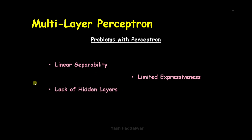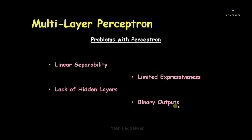The next problem is the lack of hidden layers. In the diagrammatic representation of perceptron there were no hidden layers. Hidden layers are used to extract complex features. Without them, having only one single neuron, we won't be able to extract complex and intricate features from the dataset, and therefore complex relationships and structures cannot be captured.